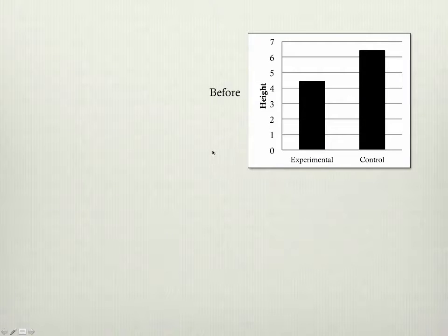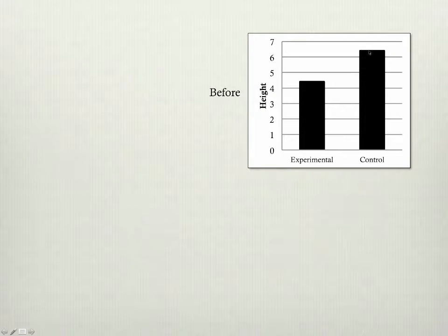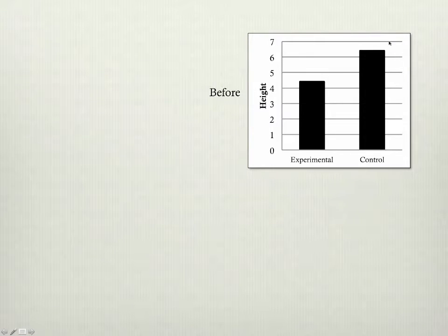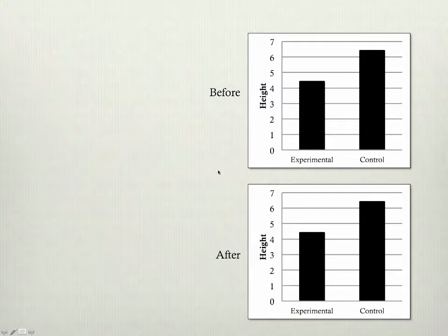The reason why that's a problem is because this is what things will look like before your experiment has even begun — you'll get this big difference between groups. We don't usually see this, so we aren't aware that it has happened, because we didn't measure all the heights of everyone in our experiment.